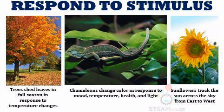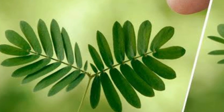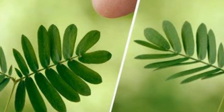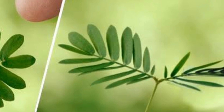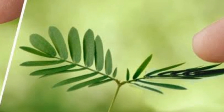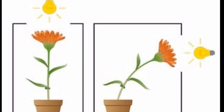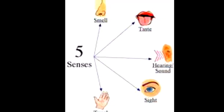The seventh characteristic of leaving things is that they respond to the environment. A stimulus means a change in the environment such as temperature, sound, or light, whereas a response is the way in which leaving things react to those changes. The mimosa plant, known as the touch-me-not plant, has leaves that fold inward and droop when touched or shaken, and reopen after a few minutes. Here, touch is the stimulus and drooping of the leaves is the response. Plants also grow towards a light stimulus. Animals respond to stimuli like heat, touch, sound, smell, taste, water, and chemicals through their five sense organs.